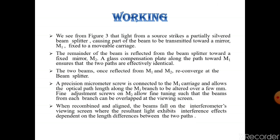To equalize the path, the glass plate is introduced between the beam splitter and the fixed mirror M2, which is known as compensating plate. The thickness and the material of the compensating plate is the same as that of the beam splitter.